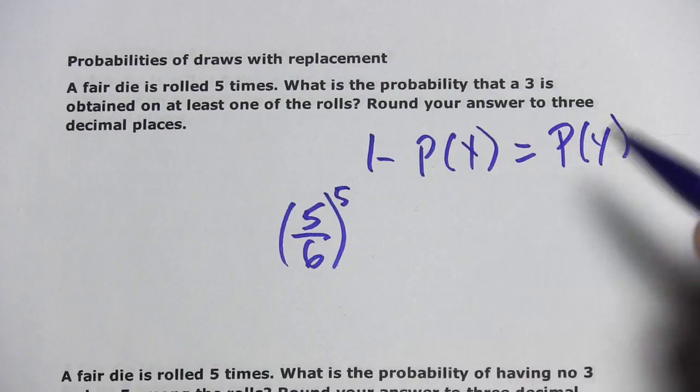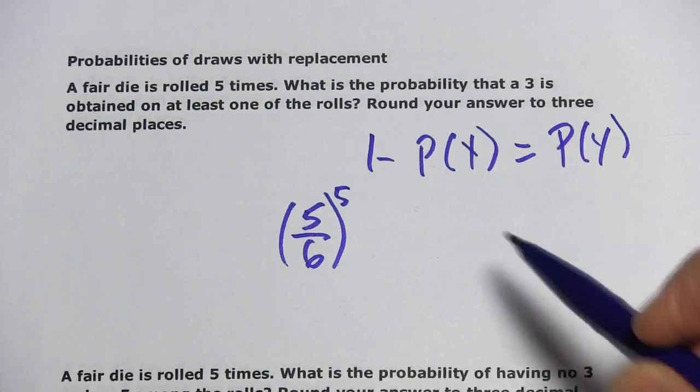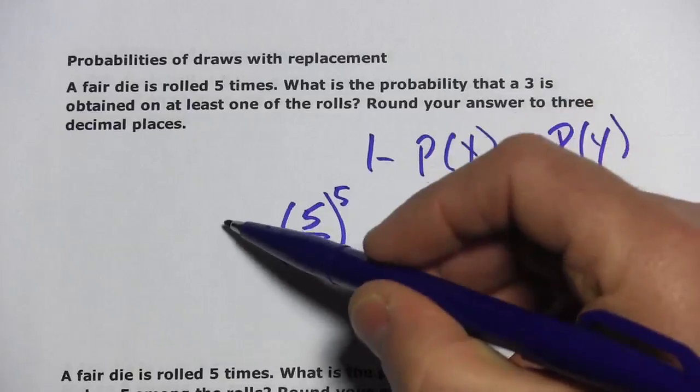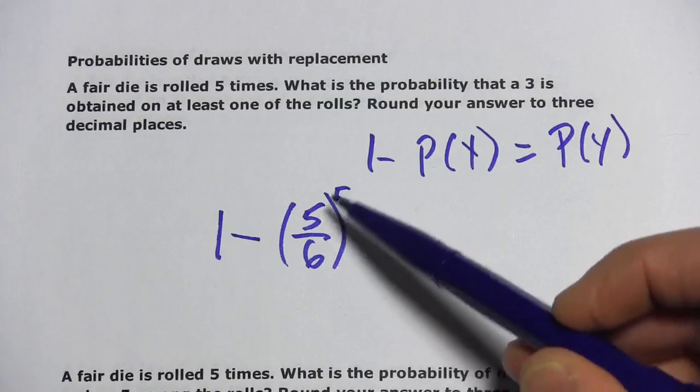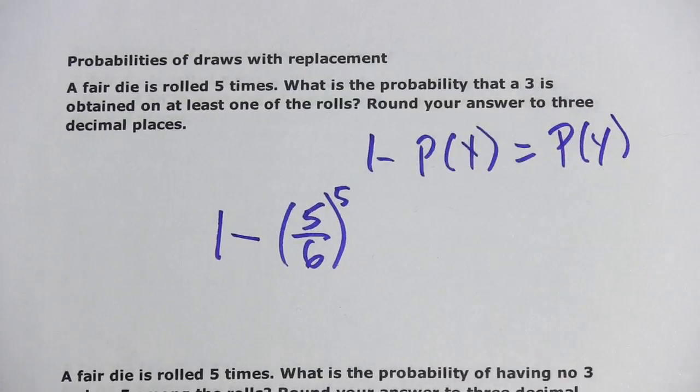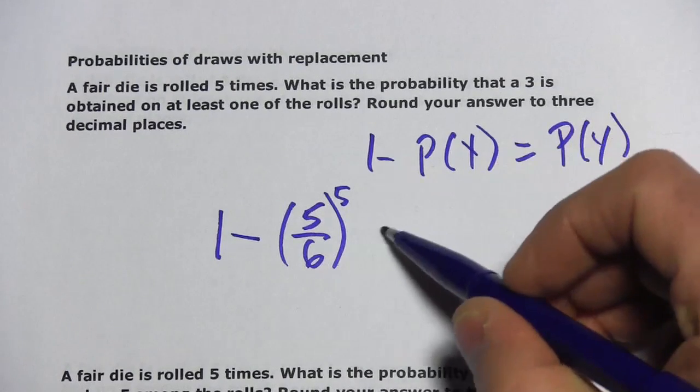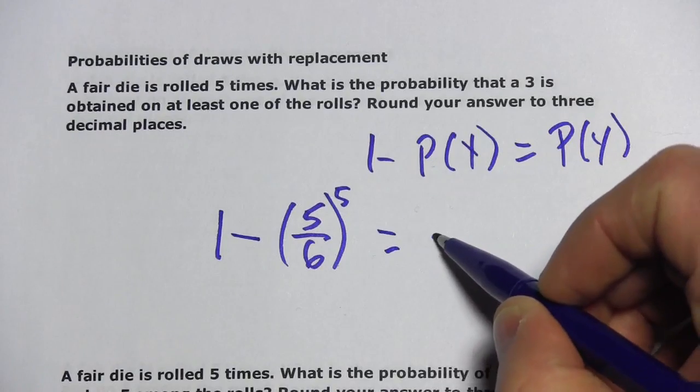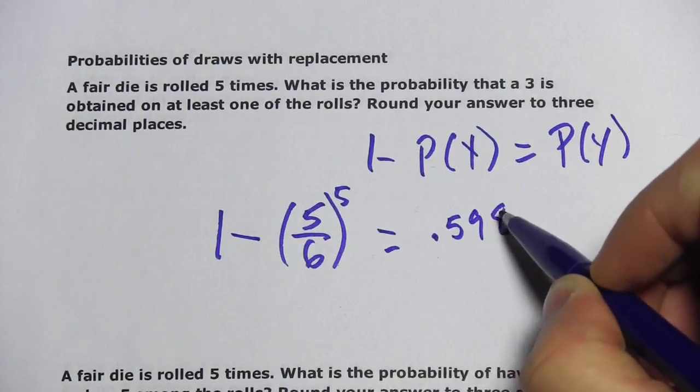We're going to use the complement rule now to go after the other part of this, which is rolling at least one three. So this answer is just going to be one minus five over six to the fifth power. Let's calculate that. What I get is about 0.598.